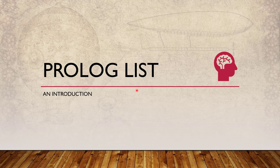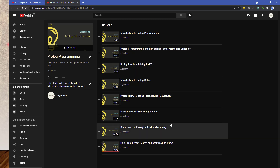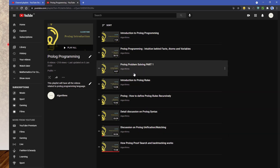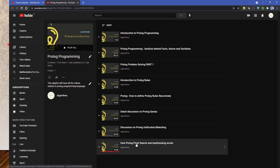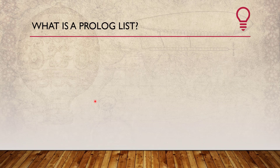Hello, in this video we will talk about the Prolog list. In the previous video we talked about how Prolog proof search and backtracking works. In this video let us concentrate on the theory part of the Prolog list; maybe in the next video we will see a live example of it. This video will be part of the Prolog programming playlist, appearing after the video on proof search and backtracking. To start, let us get a brief idea about what a Prolog list is.